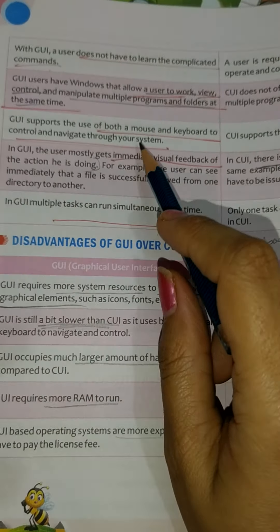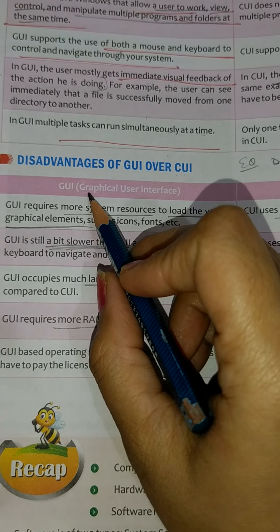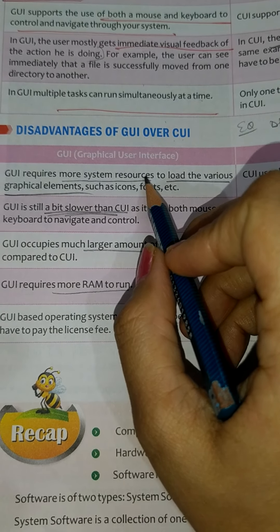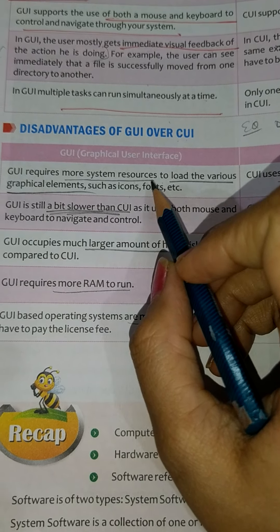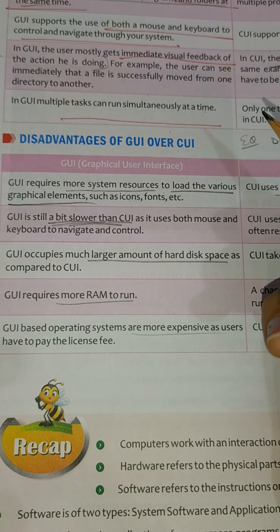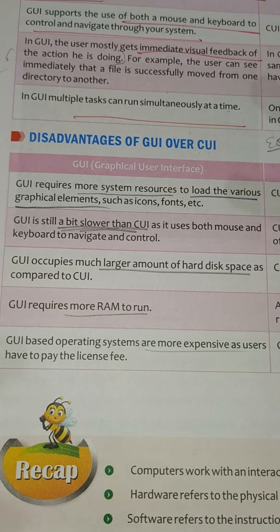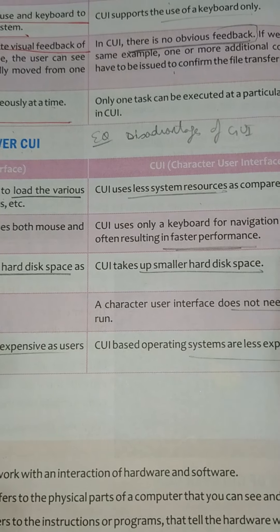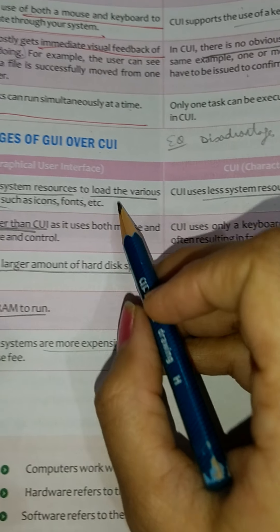Apart from these advantages, there are some disadvantages of GUI over CUI. First disadvantage: GUI requires more system resources to load the various graphical elements such as icons and fonts. System resources can be system memory. In CUI, because you just have to write commands and only need a keyboard, very less system resources are required as compared to GUI.